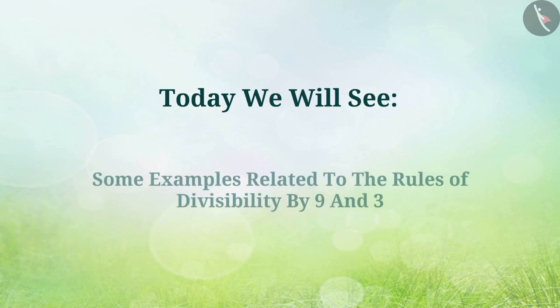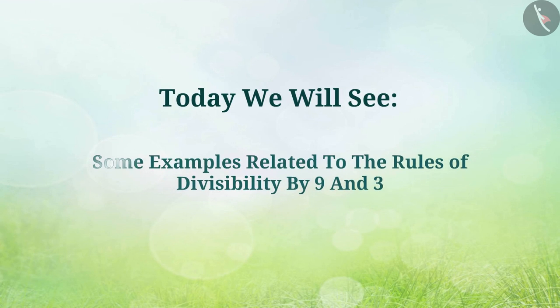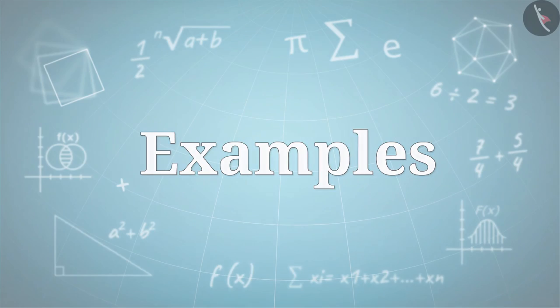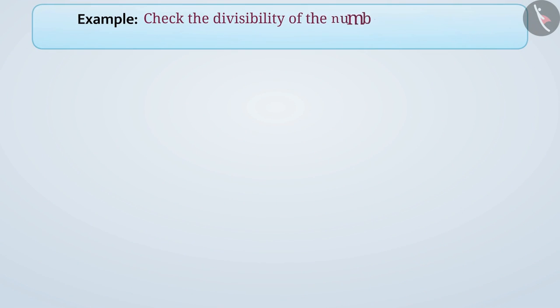Today, we will see some examples related to rules of divisibility by 9 and 3. Check the divisibility of number 25,69,815 by 9 and 3.